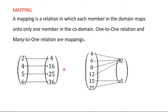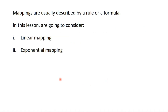In the previous video on relations, we saw that when you have two sets, they can be linked by a where statement, and that where statement is what we refer to as the relation — the connection between the two sets. In mapping, members of the two sets can be linked by a mathematical statement. In this case, it is not going to be a where statement, but it is going to be a mathematical statement, and that statement is referred to as the rule or the formula.